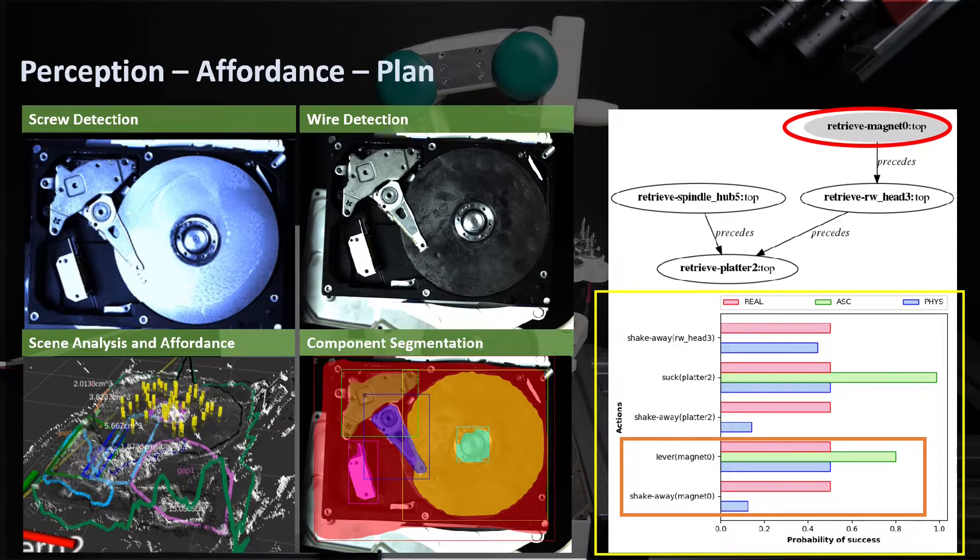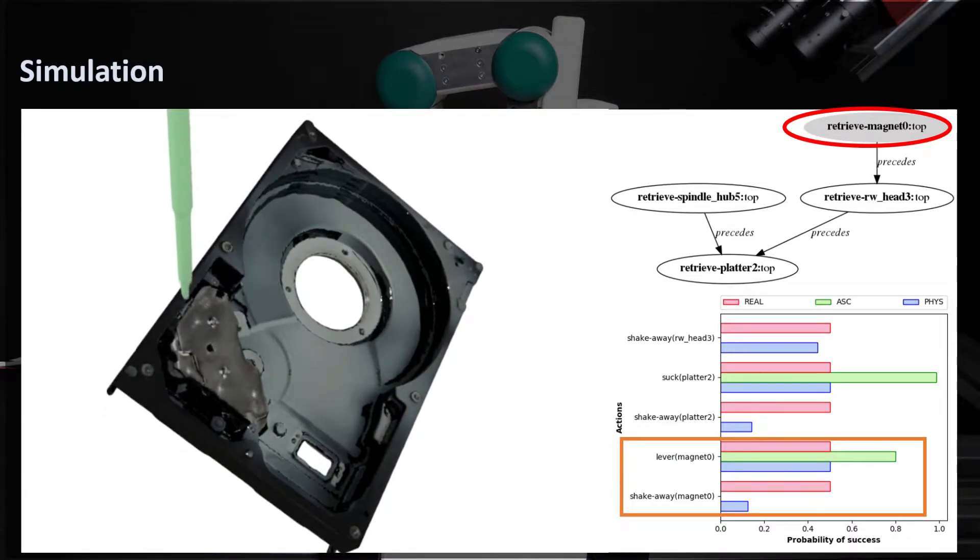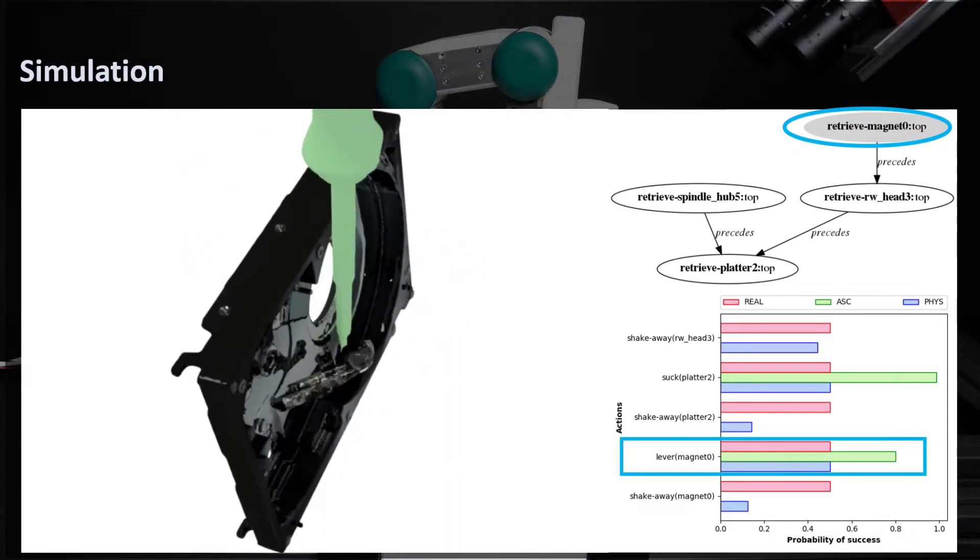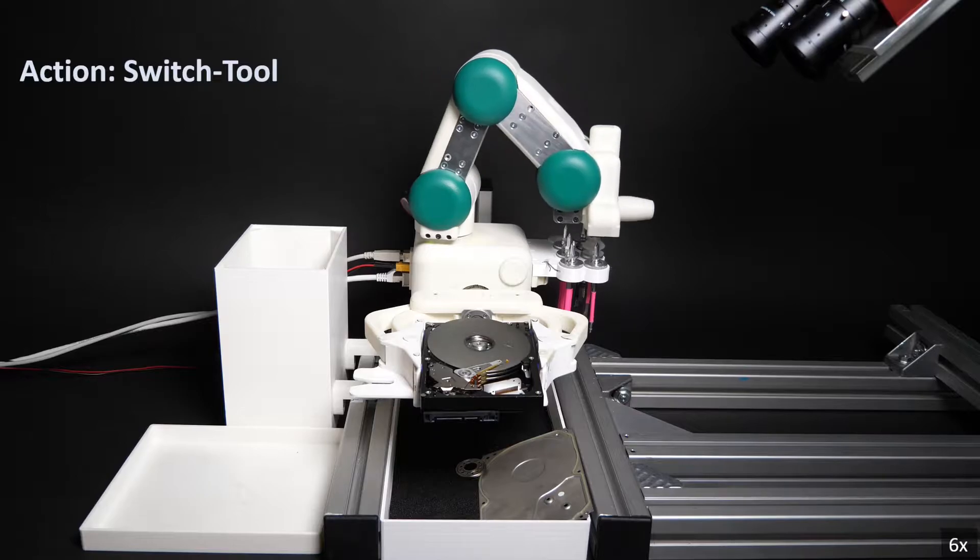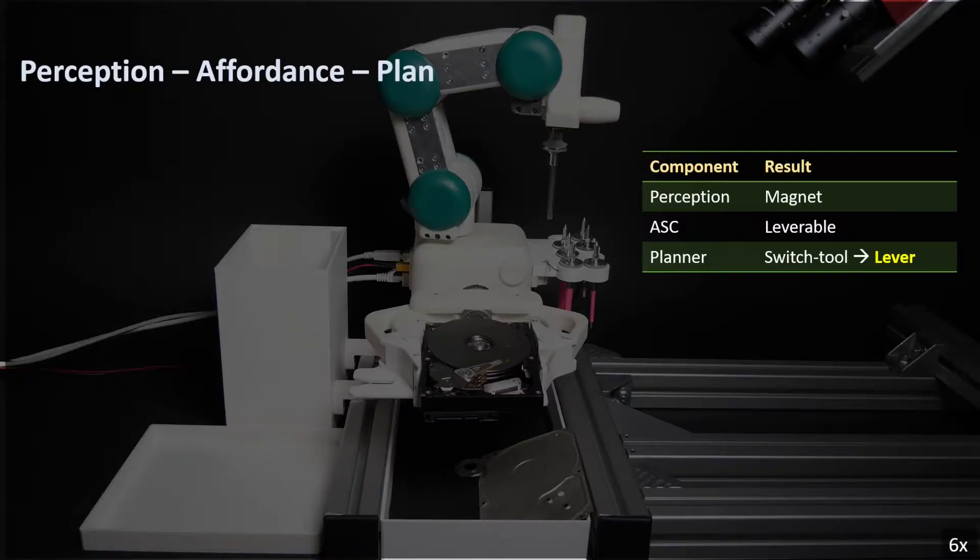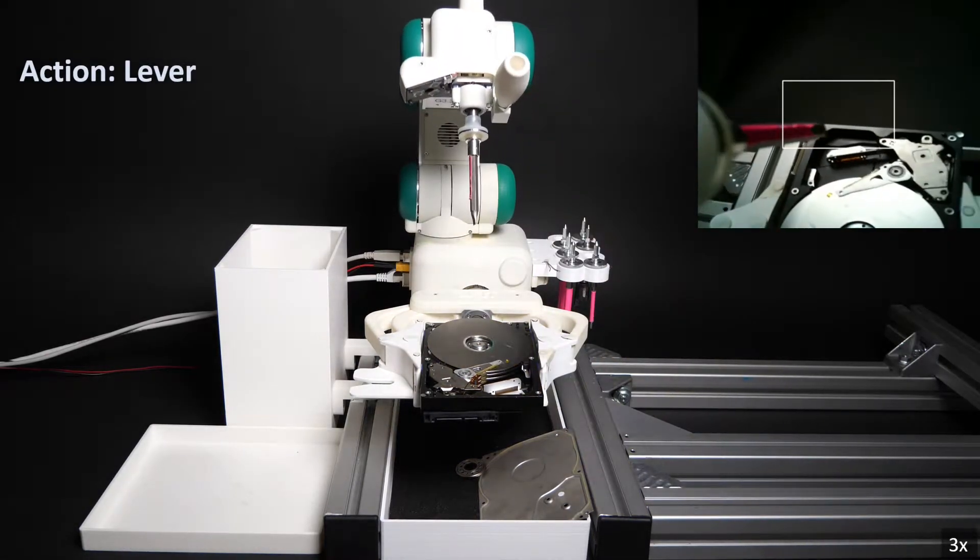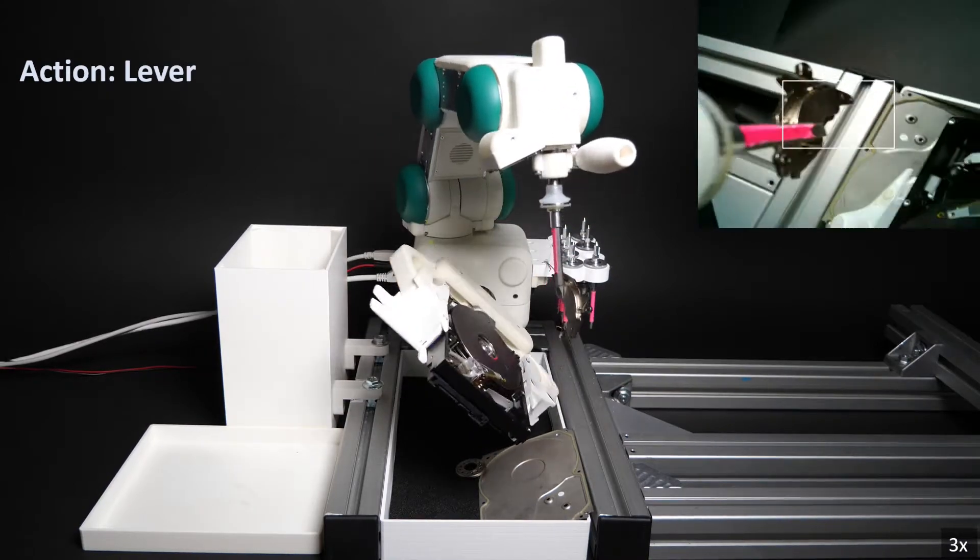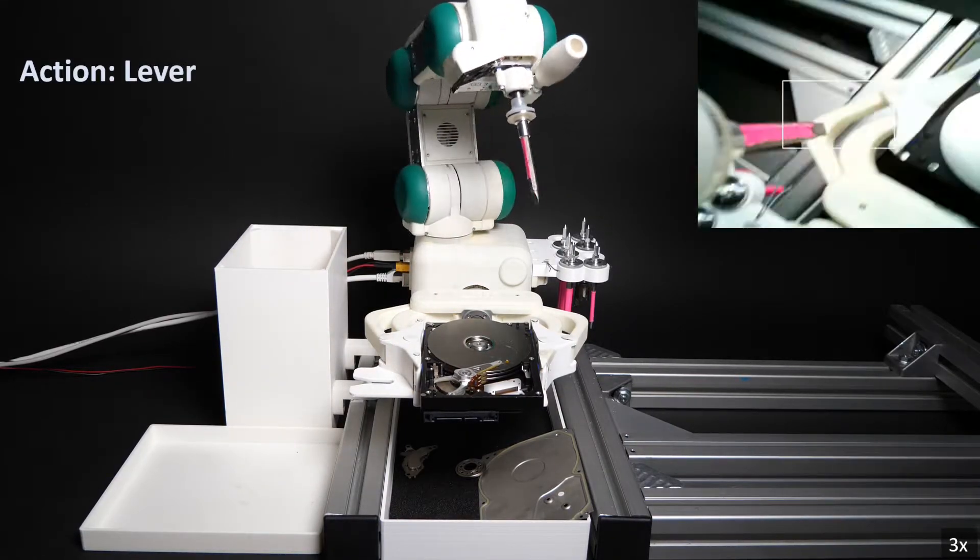They are lever and shake-away actions. Thus, a simulated action is requested to disambiguate between the two. Since the simulated lever action is successful, the system decides to switch to the lever tool and then lever the magnet. The lever motion is learned from human demonstration by robot-assisted kinesthetic teaching. The lever pose is parameterized by the ASC according to the position of the magnet in the scene.